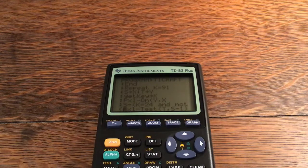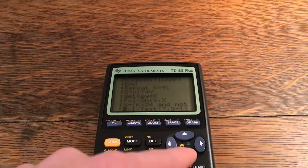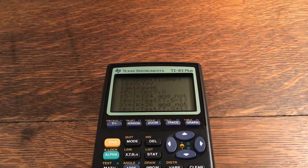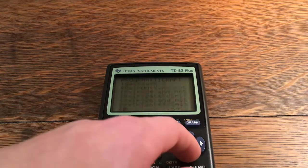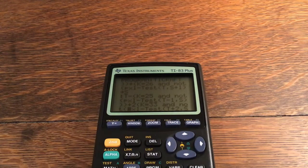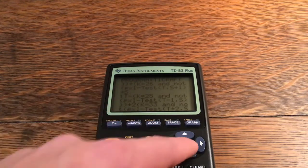S store into X, T store into Y. Get key store into K. Pixel on at Y comma X. S minus K is equal to 24 and not pixel test at T comma S minus 1, two parentheses, plus K is equal to 26 and not pixel test at T comma S plus 1, one parenthesis, store into S.